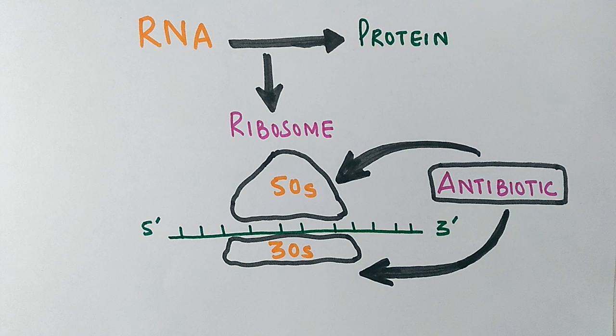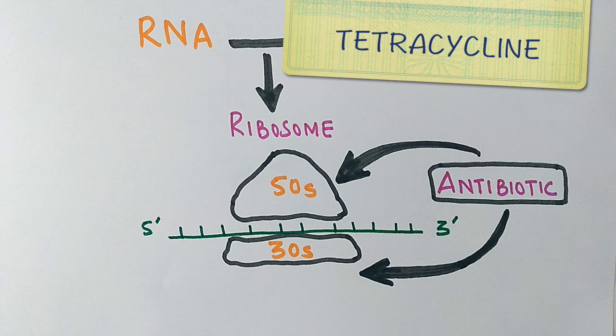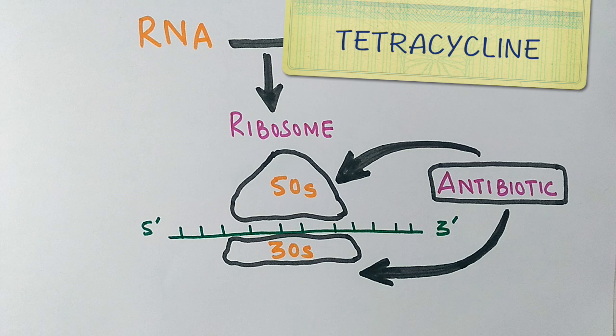For this inhibition process, we use drugs like clindamycin that targets 50S unit of ribosome, chloramphenicol that also targets the 50S unit, and for 30S unit, there are tetracyclines that inhibit the protein synthesis process.